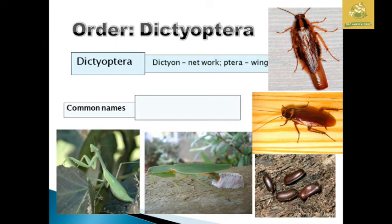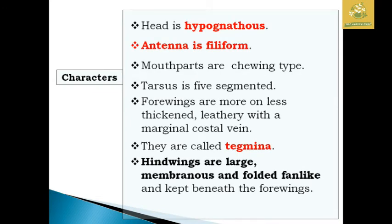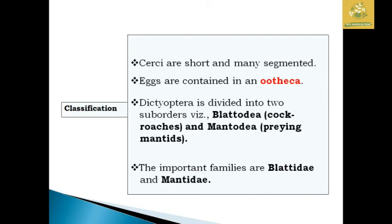The next order is Dictyoptera. 'Dictyon' means network and 'ptera' means wings, so these insects have network-type wings. The common names are cockroaches and praying mantis. Characteristics include a hypognathous head, filiform antennae, and chewing mouthparts. The tarsus is five-segmented. The forewings are more or less thick and leathery with marginal costal veins, called tegmina. The hindwings are large, membranous, and folded fan-like, kept beneath the forewings. The cerci are short and many-segmented; the egg case is called ootheca.